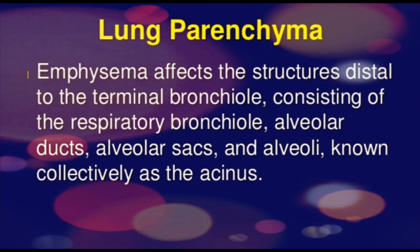Emphysema affects the structure distal to the terminal bronchioles, which are known as the acinus. The acinus includes respiratory bronchioles, alveolar ducts, alveolar sacs and alveoli — so there are basically four components of the acinus.